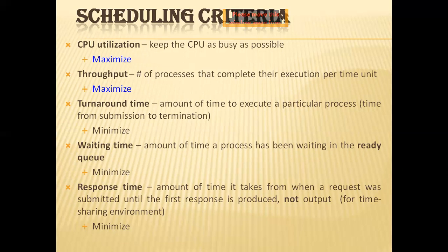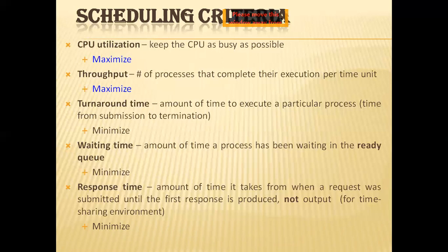Third is turnaround time: from the point of view of a particular process, the important criterion is how long it takes to execute that process. The interval from the time of submission of a process to the time of its completion is the turnaround time. Fourth is waiting time: the CPU scheduling algorithm affects the amount of time a process spends waiting in the ready queue, and waiting time is basically the sum of all periods spent waiting in the ready queue.